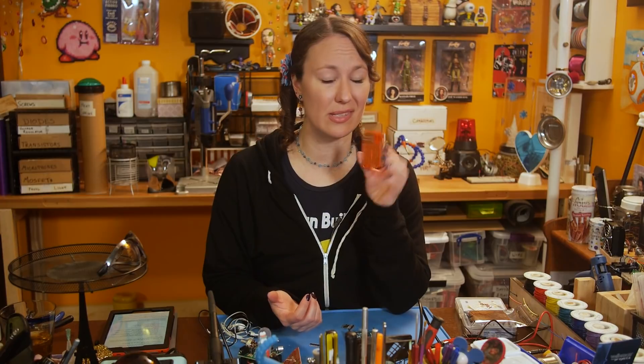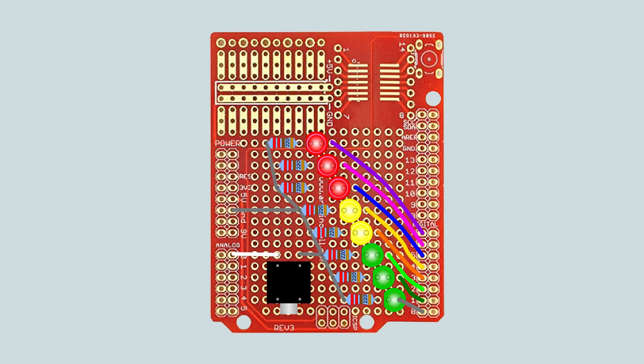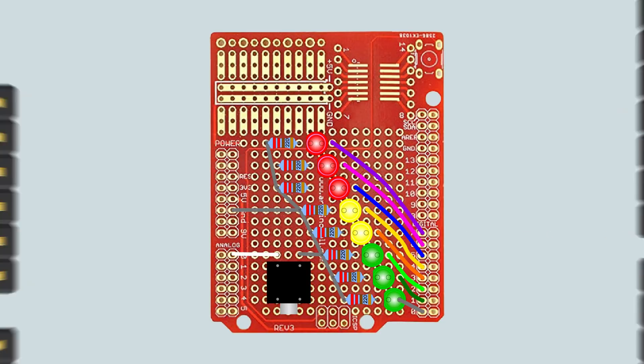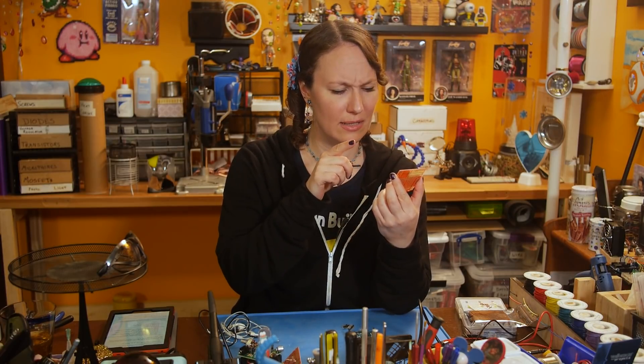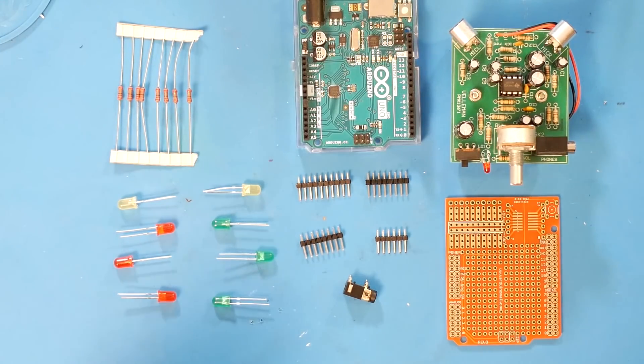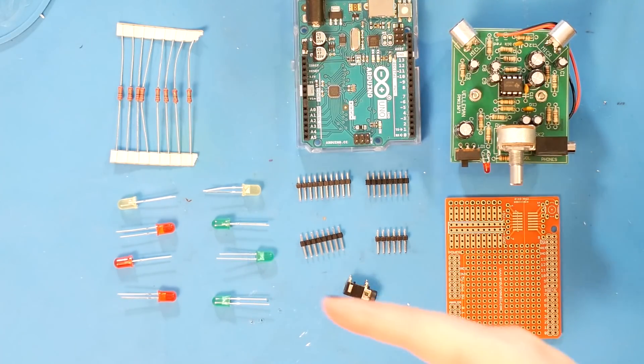In terms of what I need to solder to on this board, I only need to connect to A0, ground, and eight of the digital pins. But for stability I'm going to add headers to all four sections for a nice solid connection. So I need header pins that are 8x, 6x, 8x, and 10x. I've got my blank shield, my four sets of header pins, my eight LEDs, my eight current-limiting resistors at 220 ohm, and the spare audio jack. It's soldering time!